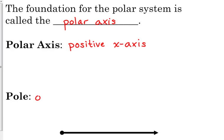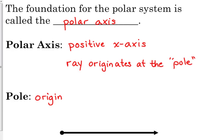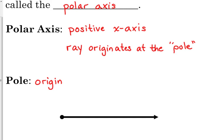The pole is like the origin. The polar axis is a ray that actually originates at the pole or the origin. So here's an example of a ray. This would be our pole right here. This is the polar axis. This whole thing is called a ray.